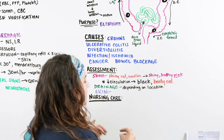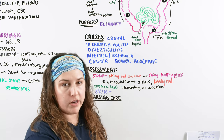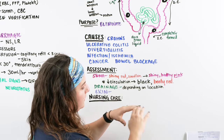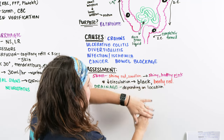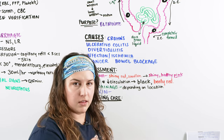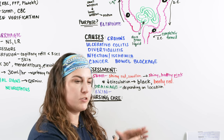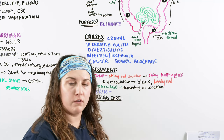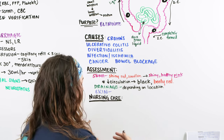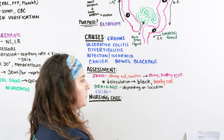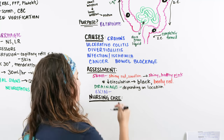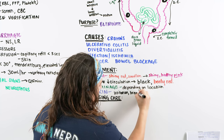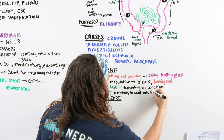We also want to teach our patient about the skin around the stoma. When we put on the drainage system, we cut a wafer that goes around the stoma — we only want it to be about an eighth of an inch bigger than the stoma. This creates a nice barrier between the stoma and the skin, because the skin is very sensitive to the gastric juices and byproducts coming out of the stoma, which can cause skin breakdown or irritation. We want to check the skin around the stoma for any irritation or breakdown.